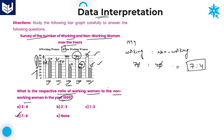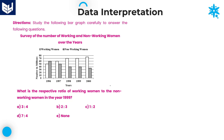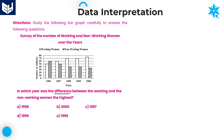7 is to 4 is the required ratio of working women and non-working women in the year 1999. Option D is the right answer for this question. Let us look at the second question: in which year was the difference between working and non-working women the highest? Here we need to calculate the difference between working and non-working women that is highest in which year.